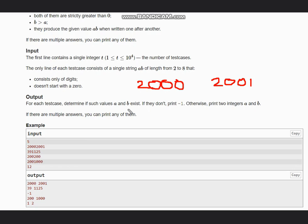For the next test case we have 391125. This can be one solution: 3 and 91125. Another solution can be 39 and 1125.